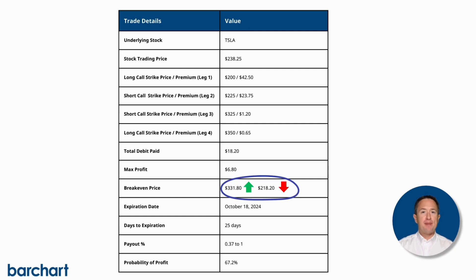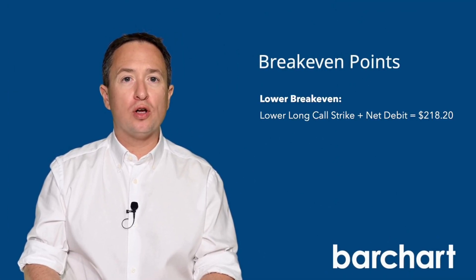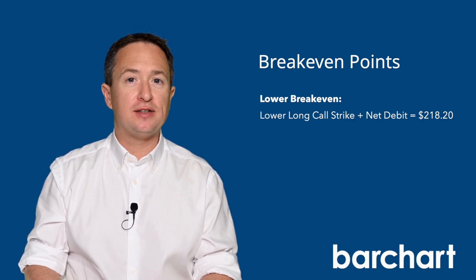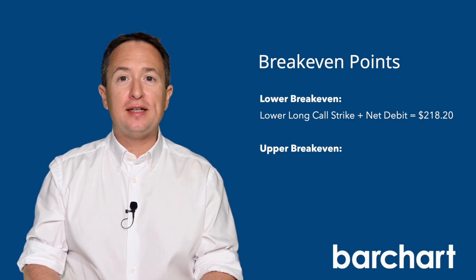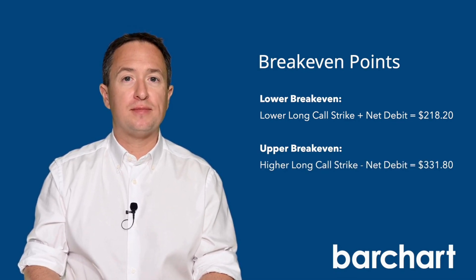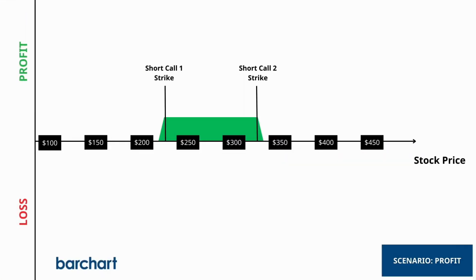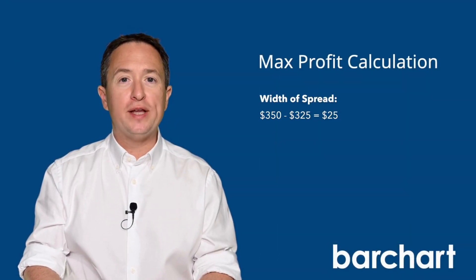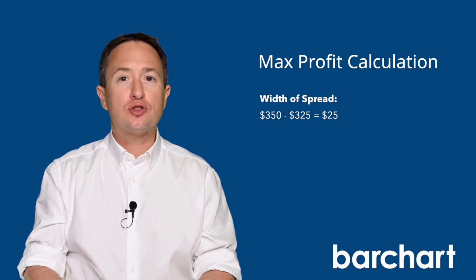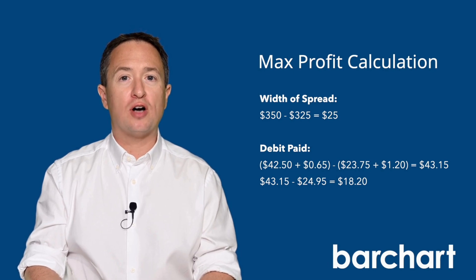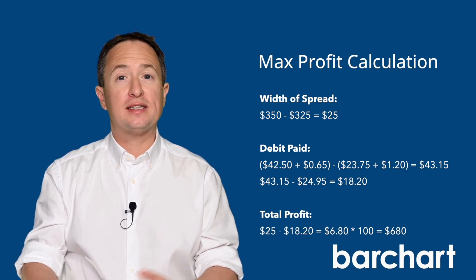For easier trade calculations, it's best to know the breakeven points to the upside as well as the downside. Add the net debit to the lower long call strike to get the breakeven price to the downside. For the breakeven to the upside, subtract the net premium paid from the higher long call strike. That makes your breakeven points $218.20 on the lower end and $331.80 on the upper end. If Tesla trades between $225 and $325 at expiration, you'll hit the maximum profit condition, which works out to $6.80, or $680 per contract.